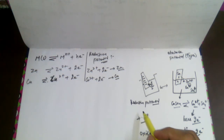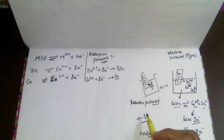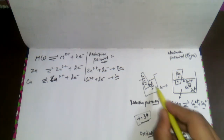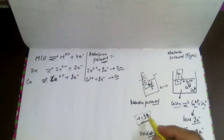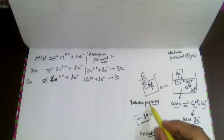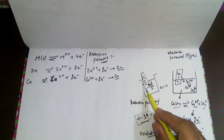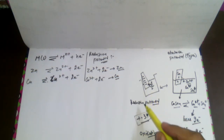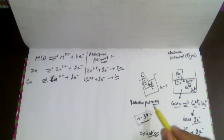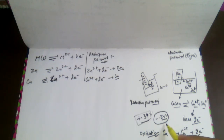If a value is given — say the standard reduction potential is +0.34 volt for copper — voltage means the power to attract electrons, which is work done in moving a charge. A positive value like +0.34 V means the electrode has the power to attract electrons from the solution, so reduction will take place. If the value were −0.34 volt, it means the electrode has the tendency to lose electrons. This is all about the types of electrode potential, thank you.